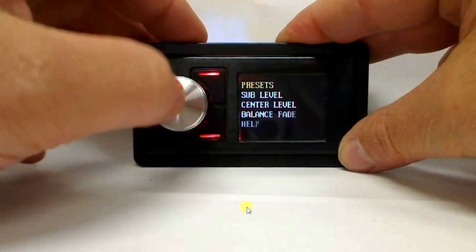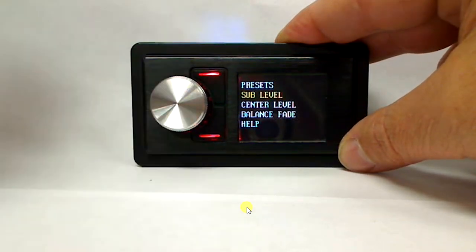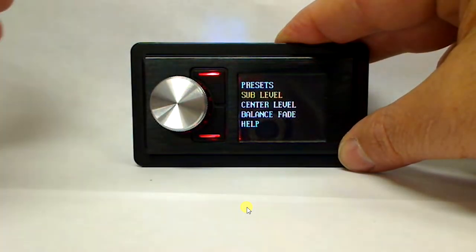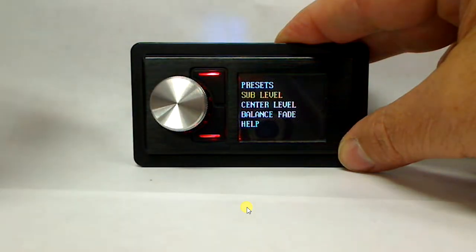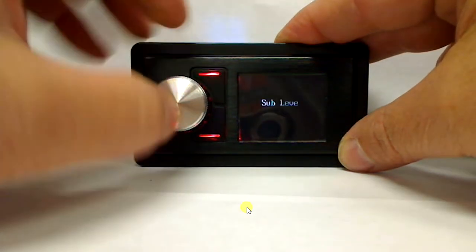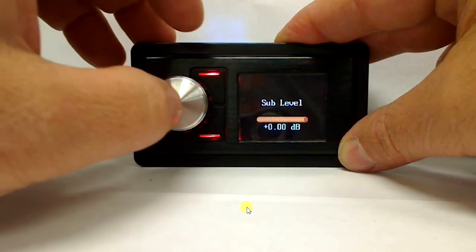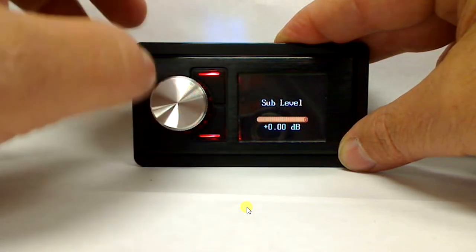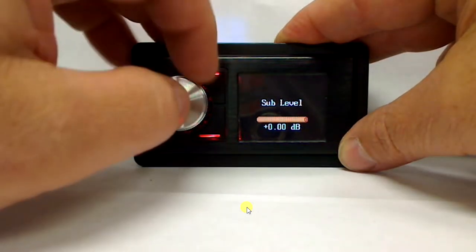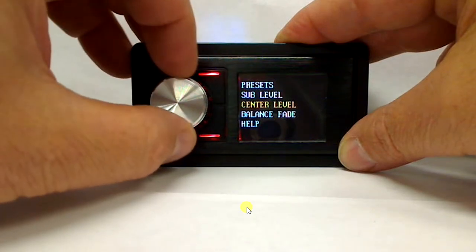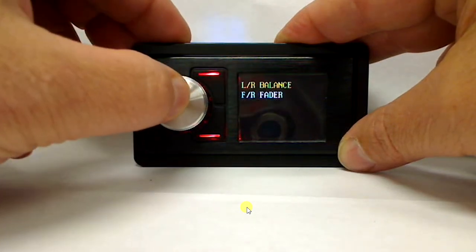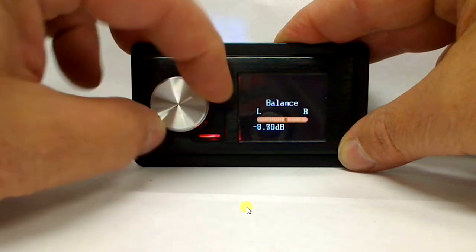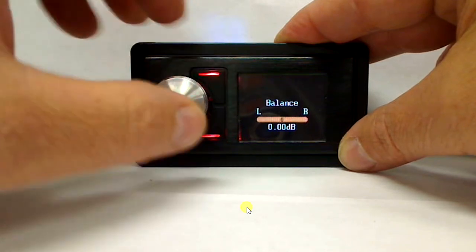Now we also have sub level, so in your software if you have set your sub assignment for the channels that you want to affect the sub, you come in, just select it and you can adjust the amount of sub that you want to have, just like you would through a sub level control on a head unit. Same thing with center, and of course if you've assigned your balance and fade you can come in and adjust your balance and fade as well through the control.